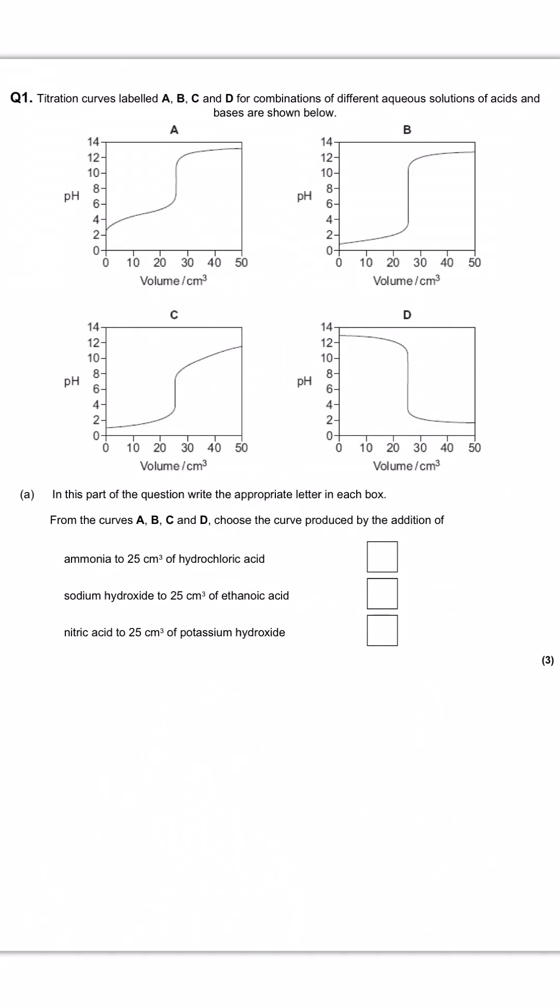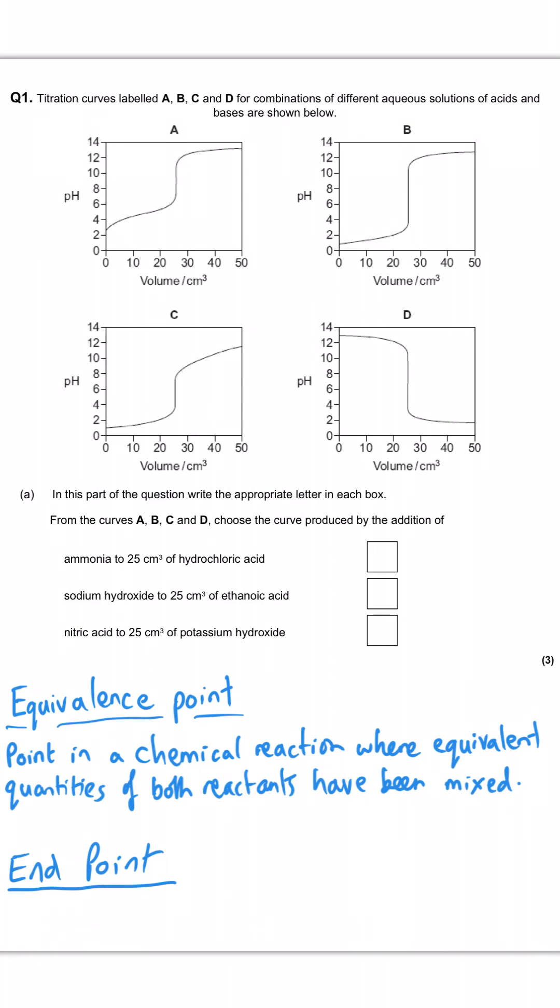Before we answer these questions, it's worth clarifying two important definitions and they are equivalence point and end point. The equivalence point is the point in a chemical reaction where you have added chemically equivalent quantities of each of the reactants. So typically that might be equal moles of one chemical as another. So in an acid-base titration, you've reached neutral.